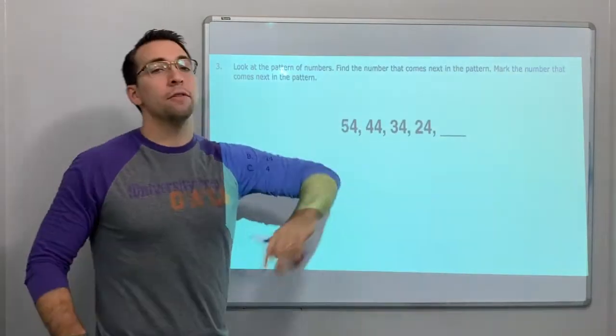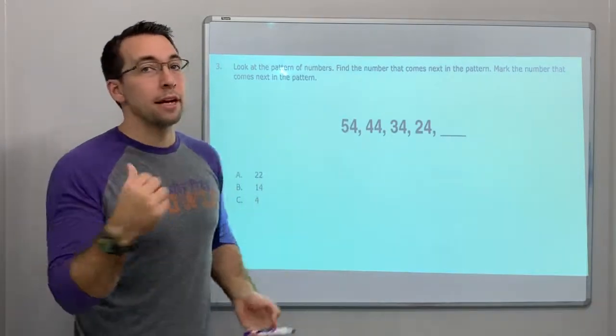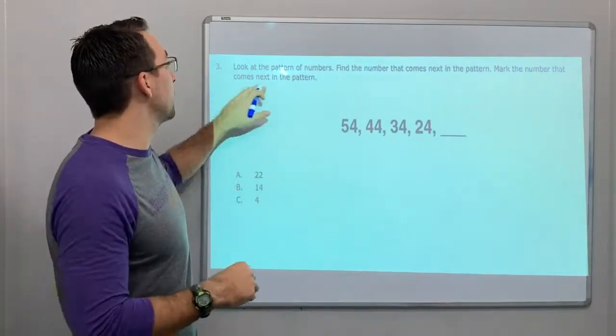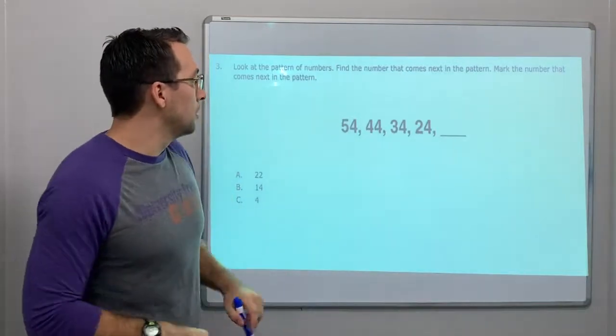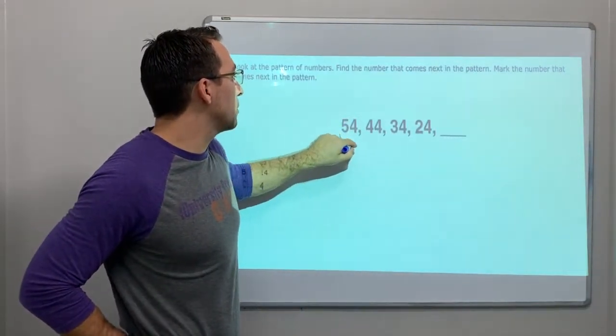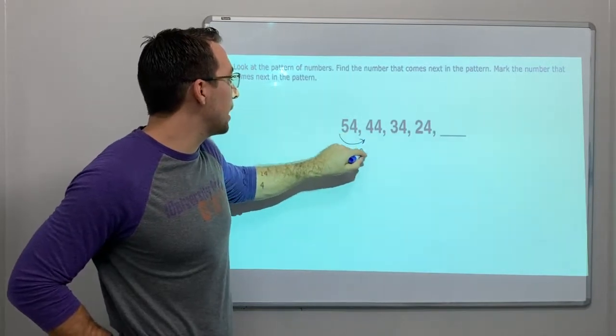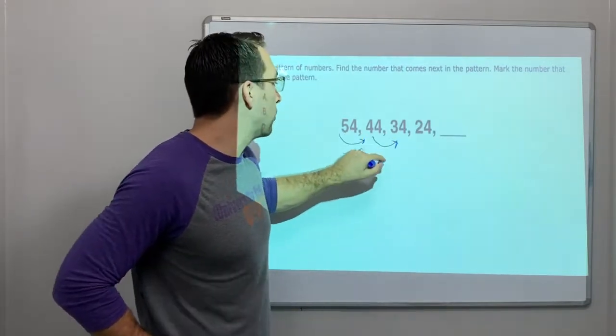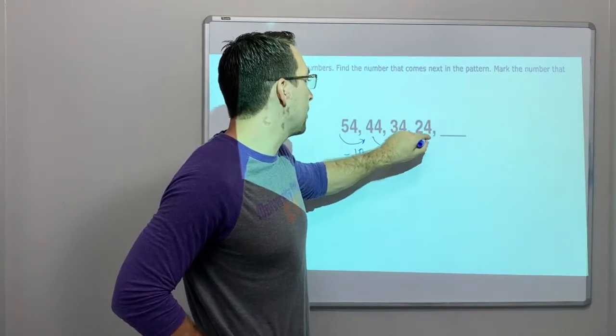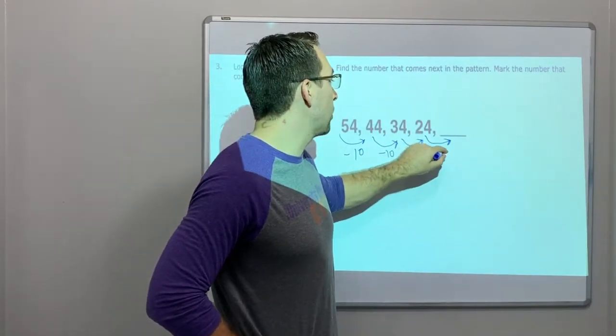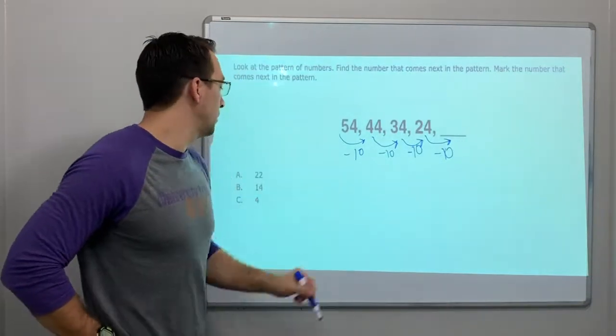We've got four questions that we're going to solve right now. Look at the pattern of numbers. Find the number that comes next in the pattern. So what are we doing here? We're 54 to 44, that is minus 10. 44 to 34 is minus 10. 34 to? That's a pattern, that's pretty simple, right? 24 minus 10. What is it? 14. 14 is our answer.